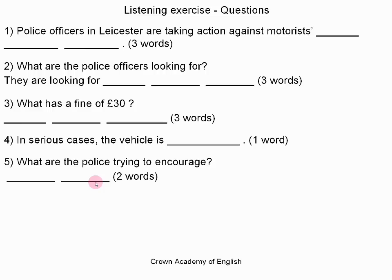Police officers in Leicester are taking action against motorists' selfish parking habits. They are looking for badly parked cars and are taking photographs of them as proof. One photograph shows a car which is parked across a pavement and almost touching the front of a house. Other photographs show vehicles on double yellow lines, in front of garages and even at bus stops. Causing an obstruction has a fine of 30 pounds. In serious cases, the vehicle is confiscated. The total cost to recover a confiscated vehicle is 150 pounds plus 20 pounds per day.